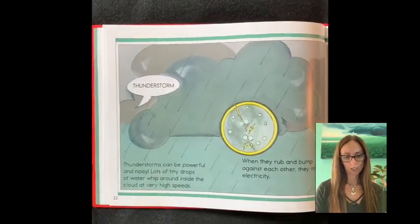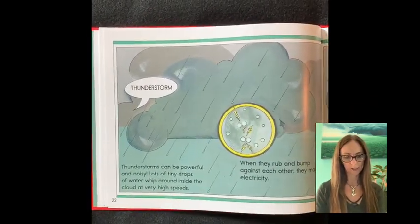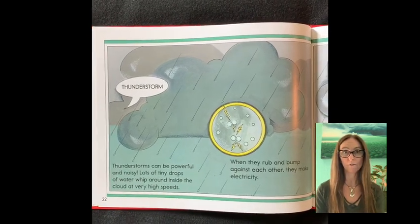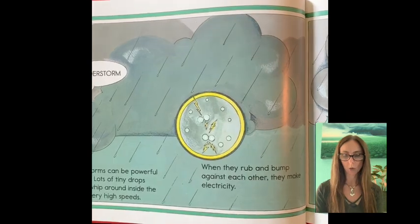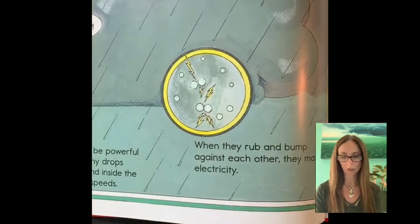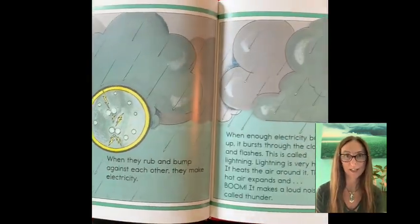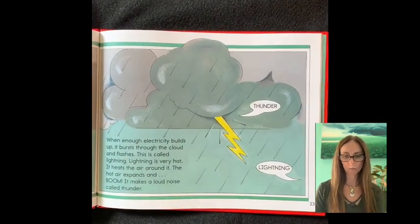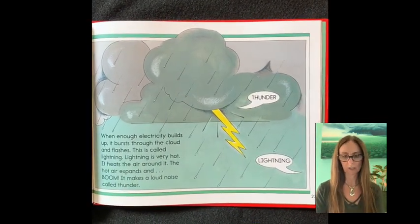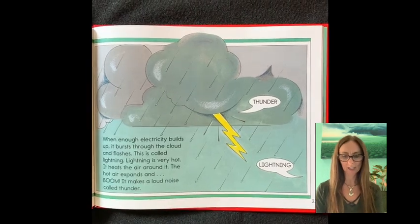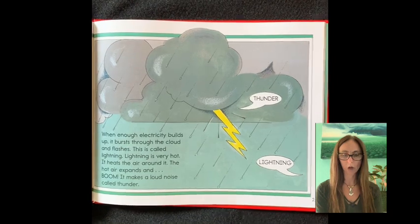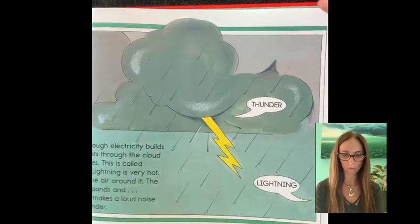Thunderstorms can be powerful and noisy. Lots of tiny drops of water whip around inside the cloud at very high speeds. When they rub and bump against each other they make electricity. When enough electricity builds up it bursts through the cloud and flashes. This is called lightning. Lightning is very hot. It heats the air around it. The hot air expands and boom! It makes a loud noise called thunder.